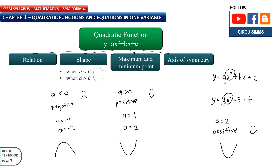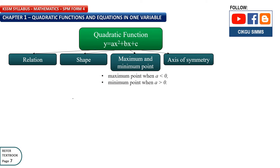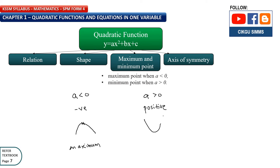Now let's move on to the third thing: maximum and minimum point. When a is less than 0, the shape of the graph opens downward, and the top point is the maximum point — that means it's the highest point. If a is greater than 0, the shape is a smiley face opening upward, and the bottom point is called the minimum point — it's the lowest point.